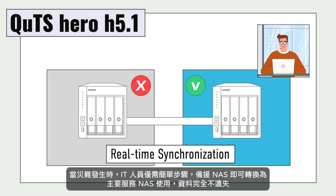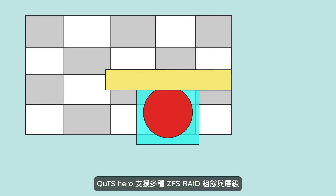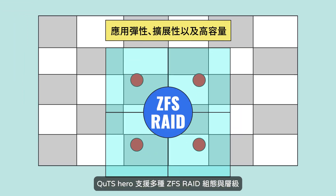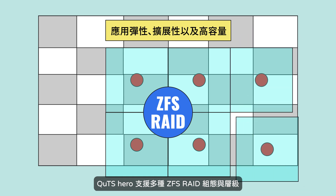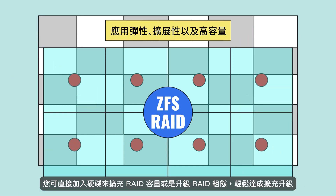If disaster strikes, IT staff can simply switch to the second NAS. QTS Hero supports various ZFS RAID layouts and levels. You can expand capacity or upgrade existing RAID groups simply by adding more drives.